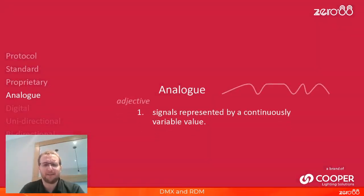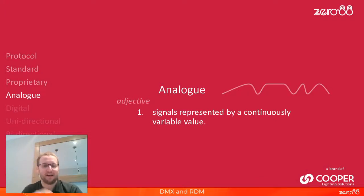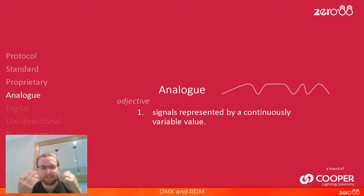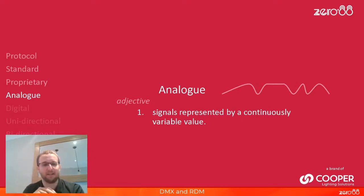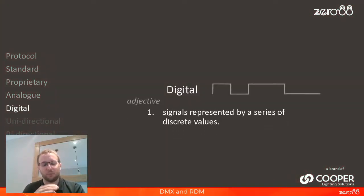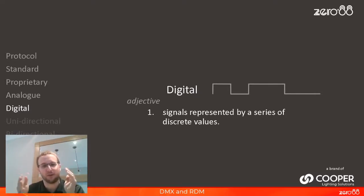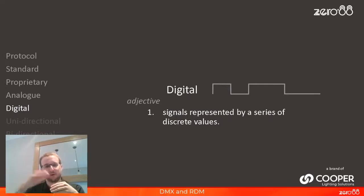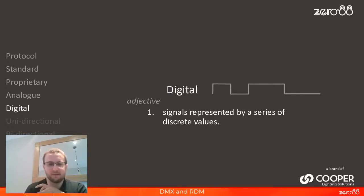The next two words: analogue and digital. Both DMX and RDM are digital signals. An analogue signal is a continuously variable signal, like you might find in a sound system. But we're looking at two digital signals today — ones and zeros, highs and lows, ons and offs. A digital signal is much cleaner, and when it gets to the end of your lighting chain, it's much easier for the device to understand.